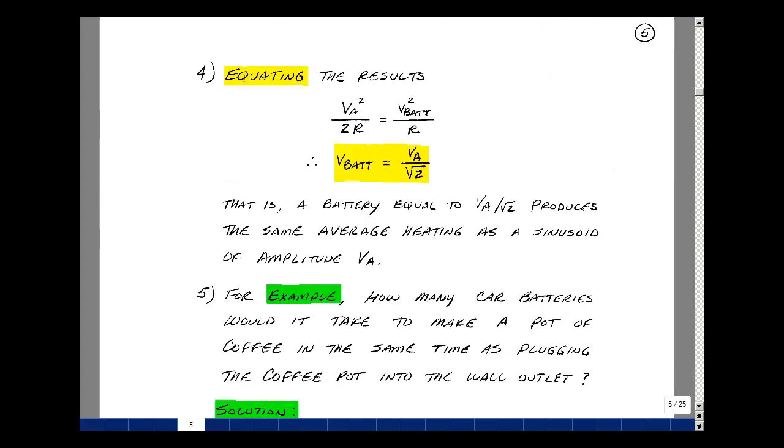One way to compare AC and DC is to do this in terms of producing the same average heating effects. We take the average value of the power dissipated in a resistor with an AC source and set it equal to that of a DC source. We could solve for what the effective battery voltage would be that produces the same heating effects as the AC source. So solve this equation. The r's cancel, so it's independent of r. Take the square root of both sides of the equation. You get v battery, and then you get v sub a divided by the square root of 2. What this means is that a battery equal to v sub a over the square root of 2 produces the same average heating effect as a sinusoid with an amplitude of v sub a.